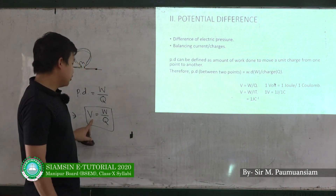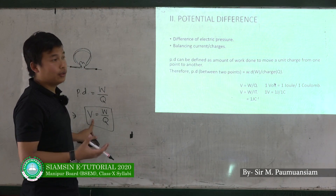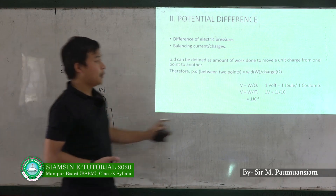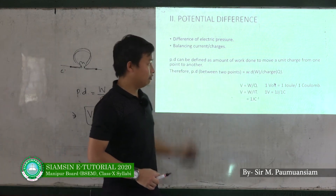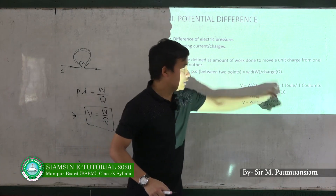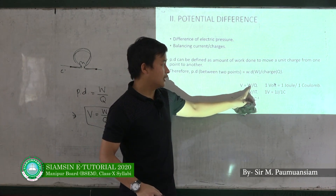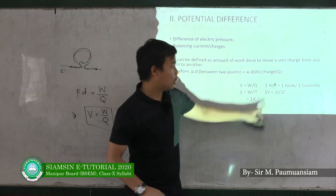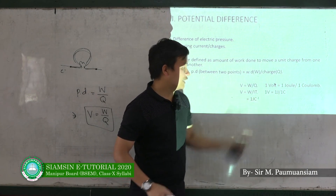The potential difference V has a unit called the volt, written as V. The work unit is the joule, written as J. The charge unit is the coulomb, written as C. Therefore, 1 volt is equal to 1 joule per 1 coulomb: 1V = 1J / 1C.